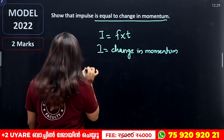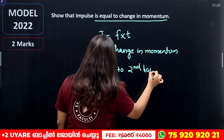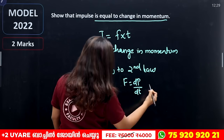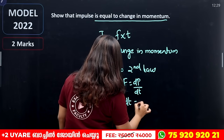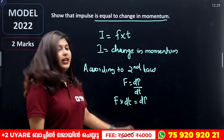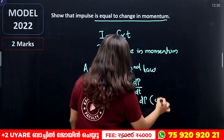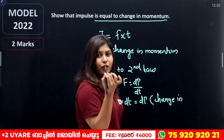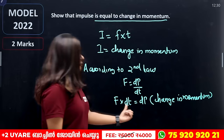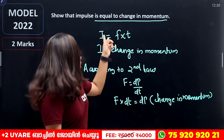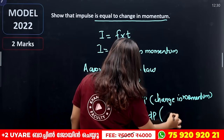According to the second law, F is equal to dp/dt. Therefore F into dt is equal to dp. Force into a small time interval — dp means change in momentum. So impulse is equal to dp, that is, change in momentum.